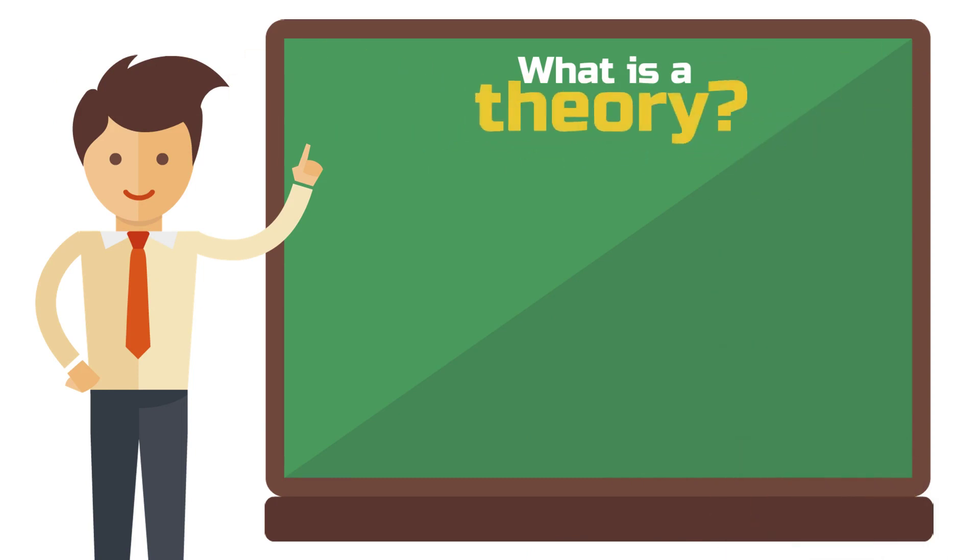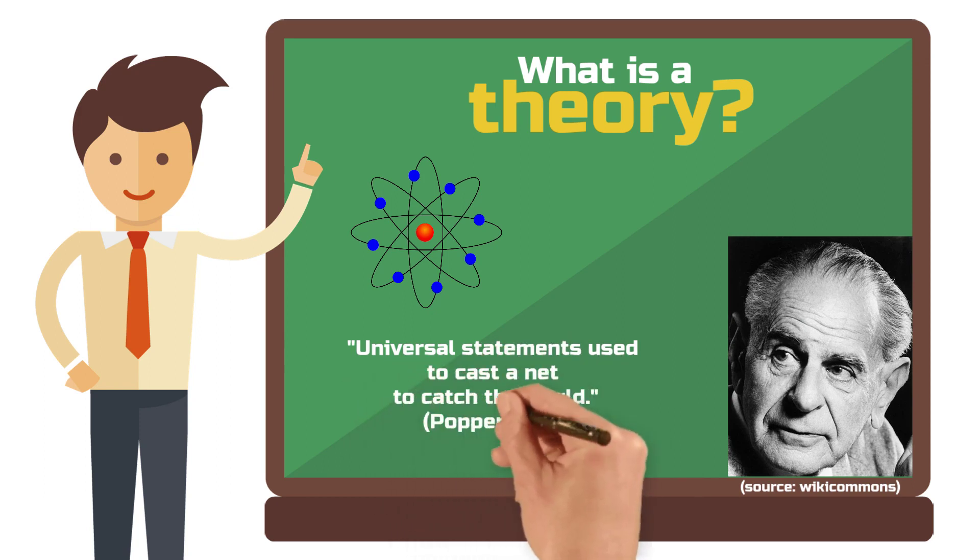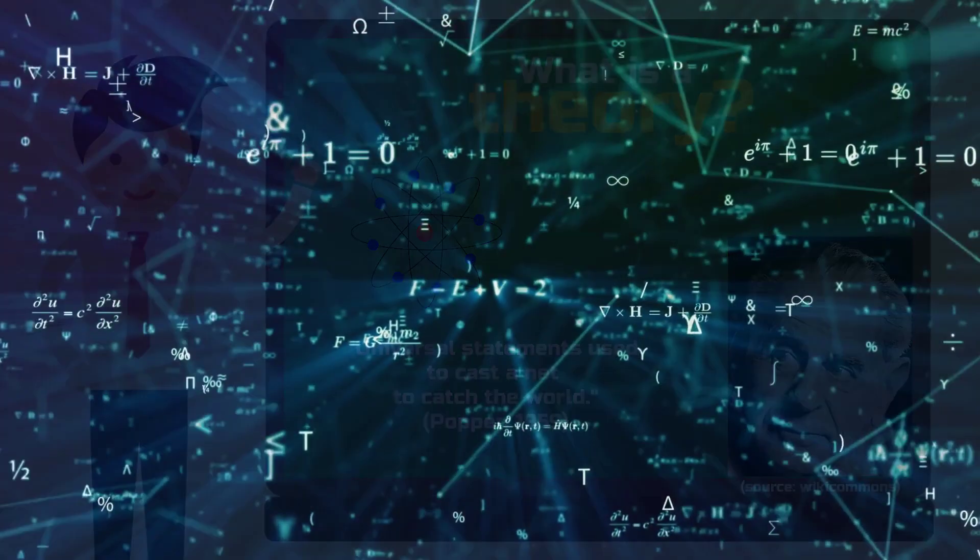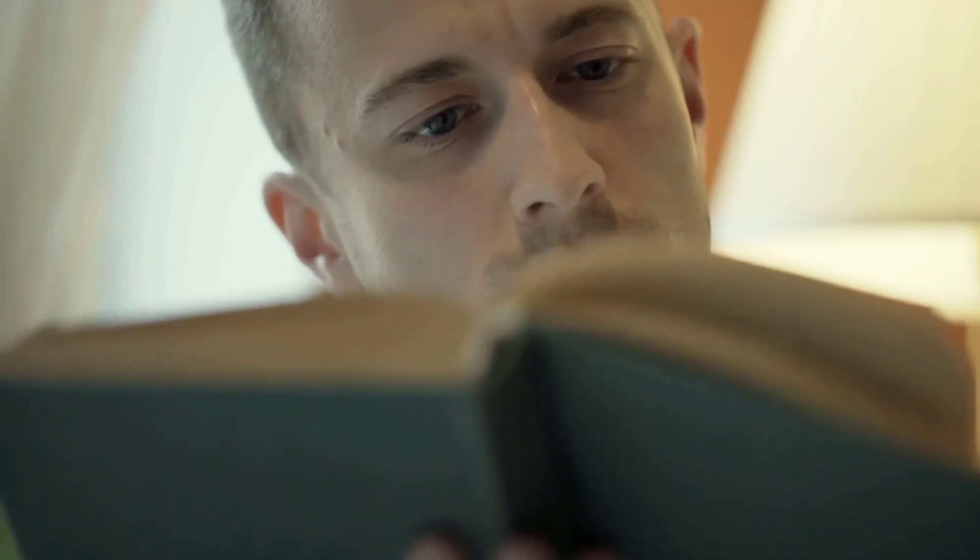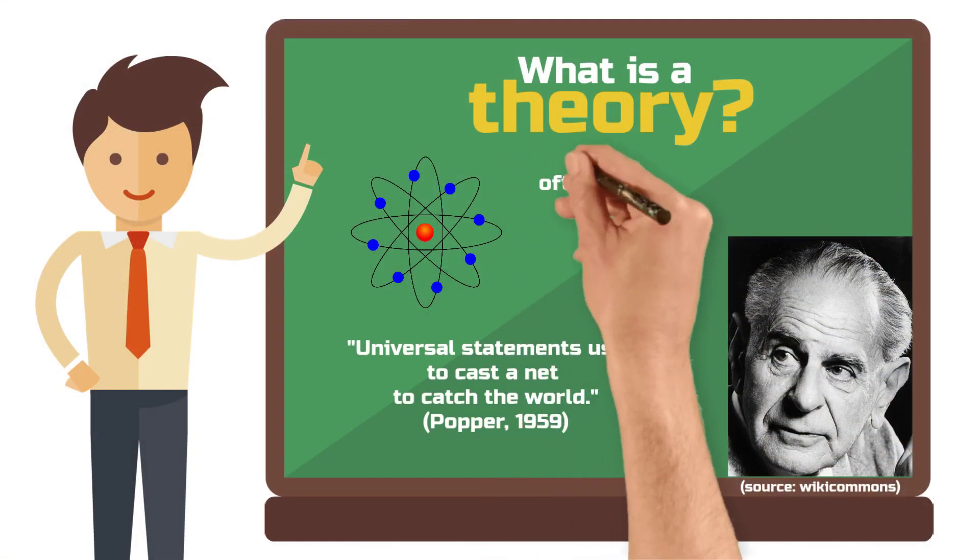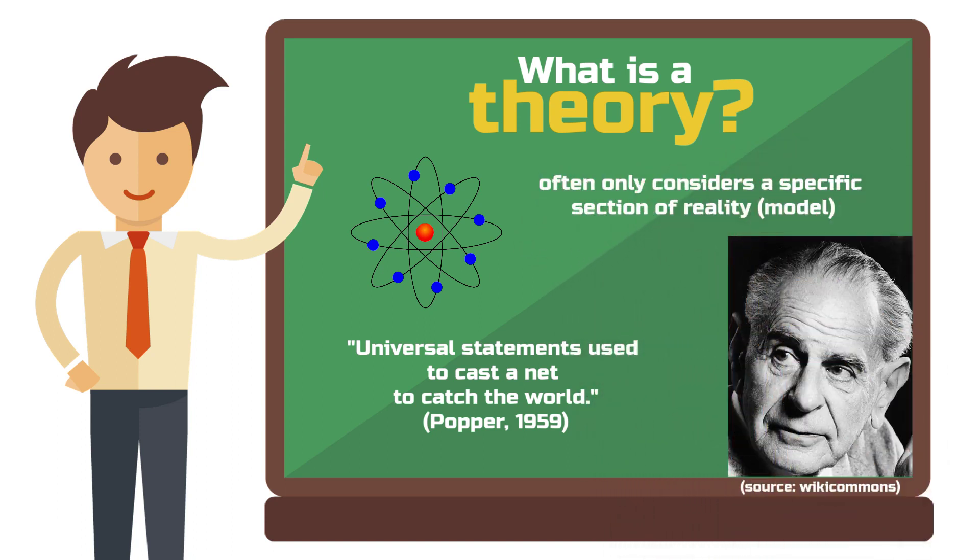Defining the term theory is not so easy. But one thing is clear. Popper defined theory as universal statements used to cast a net to catch the world. So a theory should aim to contribute general statements about phenomena in order to better explain or understand them. Specific statements that are only true in a particular situation are therefore not suitable as theory. A theory often only considers a specific section of reality. This section can then be represented as a so-called model.